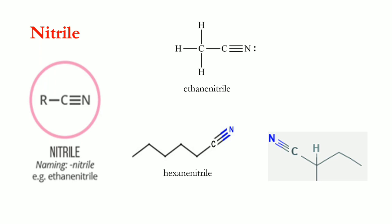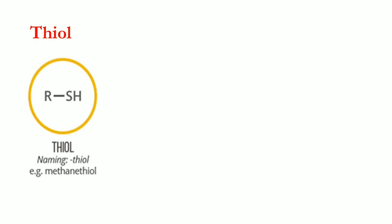If there is a substituent, we number the carbon chain starting from the terminal closer to the nitrile functional group. In this case, carbon one is at the left terminal, and the methyl substituent is at carbon two, so the name is 2-methylbutanenitrile — four carbons as the longest chain with nitrile as the functional group.